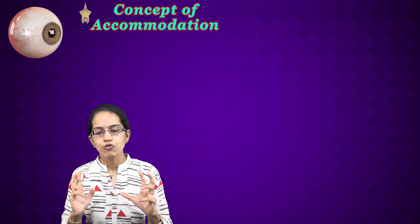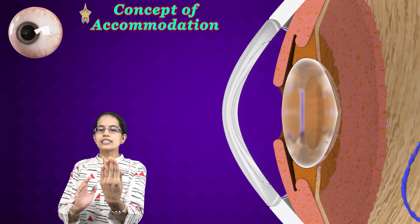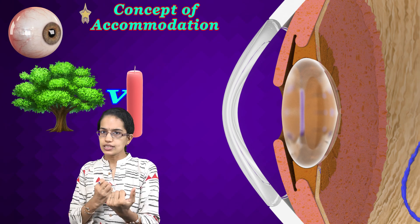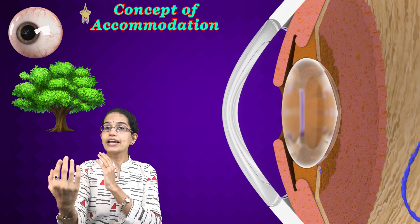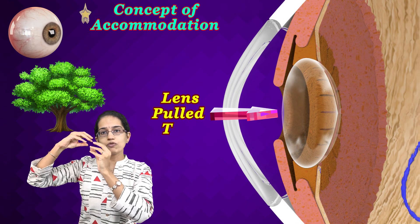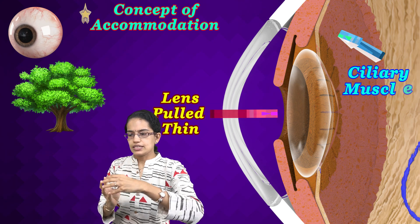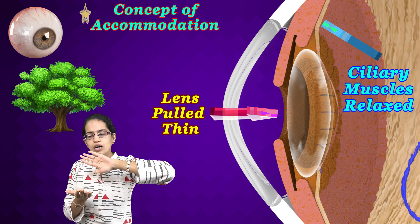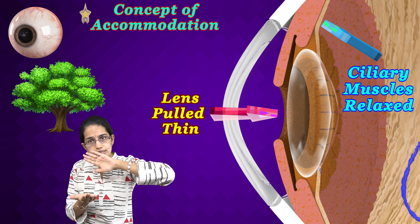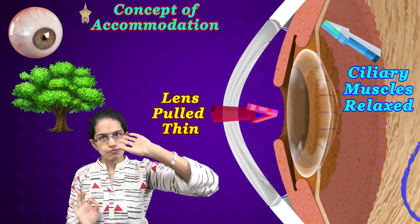The second important concept is accommodation, or focusing. Accommodation deals with the difference between viewing far objects versus near objects. When trying to see a far-off object, the lens of the eye becomes thin. The ciliary muscles are relaxed, and the outward pressure of the humor pulls the ligaments, resulting in a thinner lens.